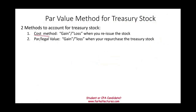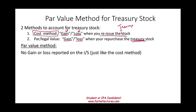Under the cost method, we account for any gain or loss in quotes when we reissue the treasury stock. So first we buy the stock, then later we reissue it, and that's when we account for the gain or loss. Under the par value method, however, we account for the gain or loss when we repurchase the treasury stock. I keep gain and loss in quotes to remind you those are not reported on the income statement.